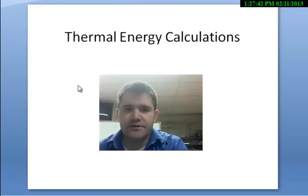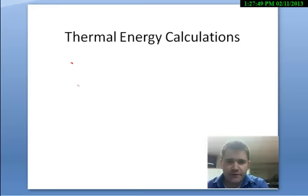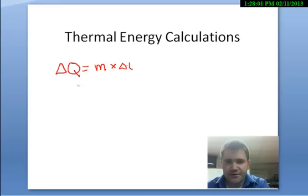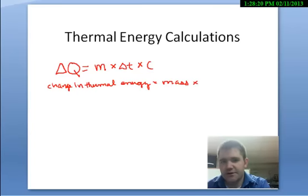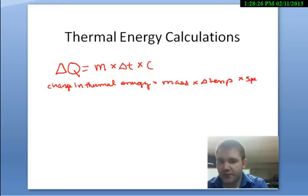Before we get started, we need to remind ourselves of what equations we have to work with. We know that the change in thermal energy is equal to the mass of a substance times the change in temperature of that substance — how much it heats up or cools down — times the specific heat of that substance. So: change in thermal energy equals mass times change in temperature times specific heat, or heat capacity.